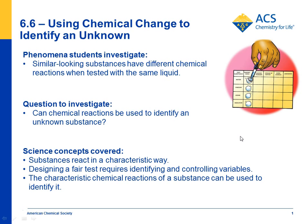In lesson 6.6, students investigate similar-looking white powders by testing them with different liquids to see if they can identify an unknown powder. The unknown powder is one of the known powders that they have been testing. The idea is to show students that substances have characteristic chemical reactions.